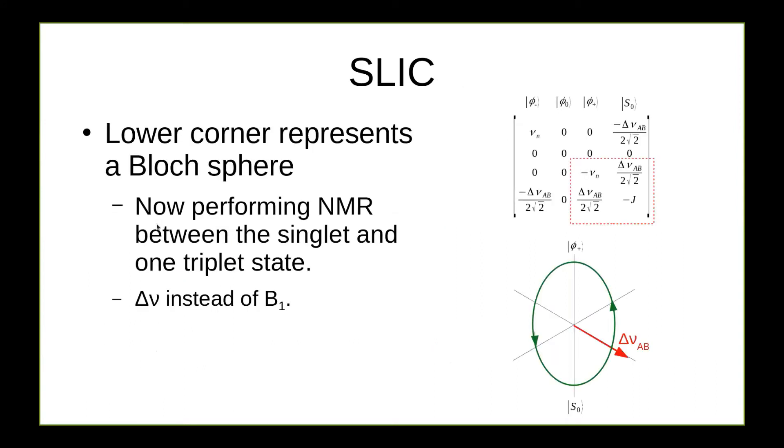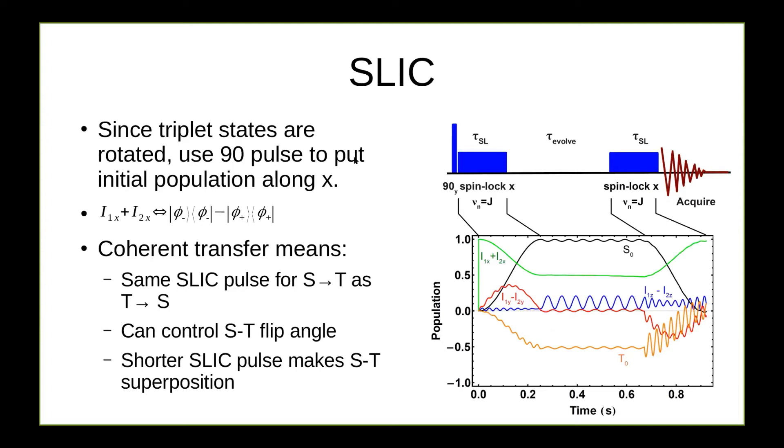So now I'm going to continue talking about slick, which is this first method. So now our lower corner represents a block sphere. And I can just draw my block sphere between T plus and singlet. And we get a rotation around delta nu AB. So this looks the same as what we had with normal NMR, but now with totally different energy and interaction terms. I have delta nu replacing B1. And I have T plus and S0 replacing up and down states.